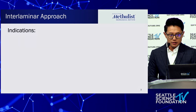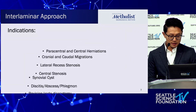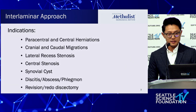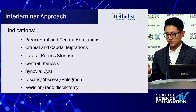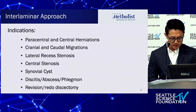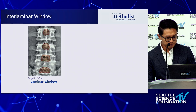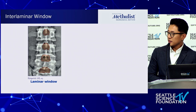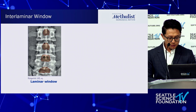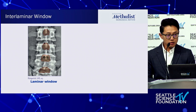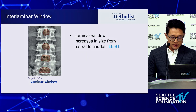The interlaminar approach is a very versatile approach — you're all extremely familiar with it already. You do these cases, these pathologies, already. It's the same thing: you're going dorsal interlaminar. The only difference is you're using an endoscope, which has its technical challenges. But you can tackle essentially anything with this. The interlaminar window gets much wider the further down the spine you go, so there's less bone to remove the more caudal you move.